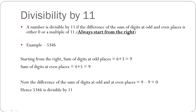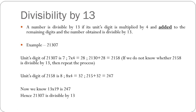Let's look at divisibility by 13. A number is divisible by 13 if its units digit is multiplied by 4 and added to the remaining digits, and the number so obtained is divisible by 13.